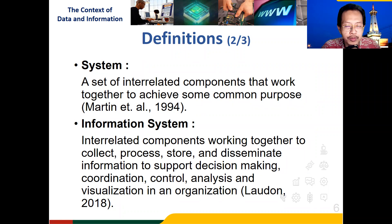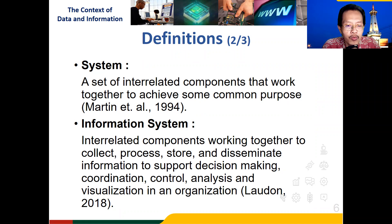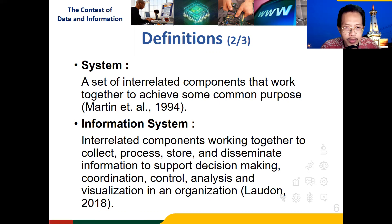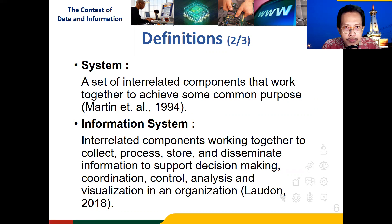From a wider perspective, the data and information would be used in an information system. But first, a system would be a set of interrelated components that work together to achieve some common purpose. Any system would be like that. Your digestive system, for instance, would consist of several components: the tongue, the throat, the stomach, the intestines, the anus, and so on. Those components are interrelating with one another. If one component fails to work — for instance, you have a sore throat — it's hard for you to swallow food, and the whole system breaks down. The system has one common purpose, for instance, transforming chemical energy into kinetic energy. That's for a digestive system.